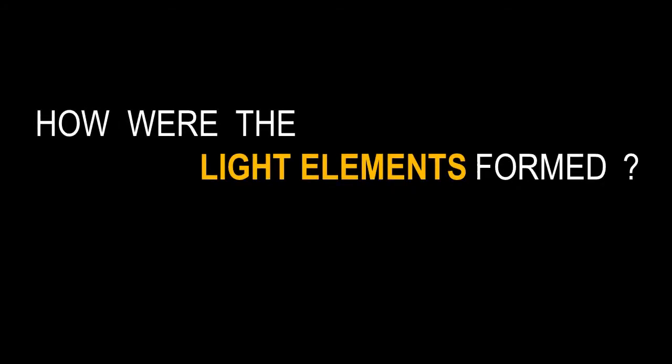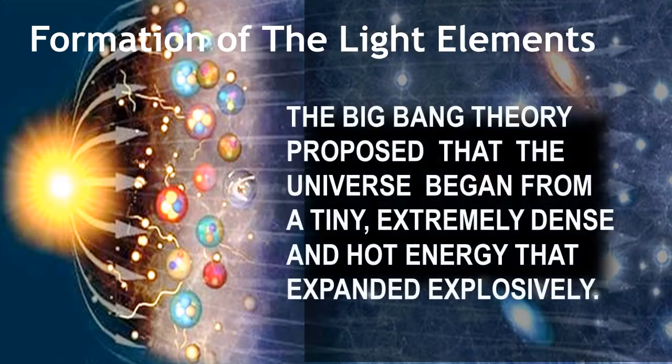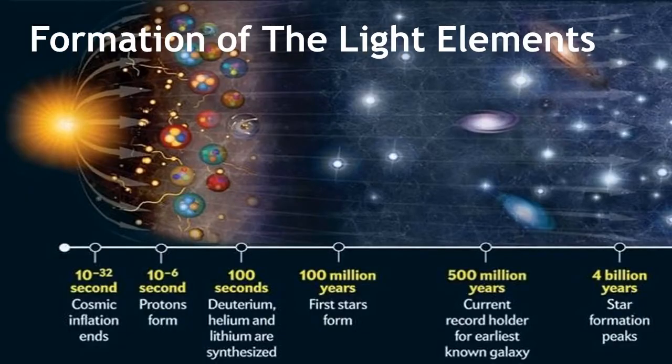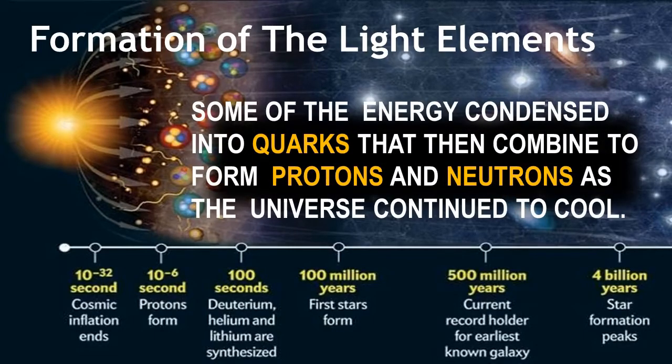How were the light elements formed? Formation of the light elements. The Big Bang theory proposed that the universe began from a tiny, extremely dense, and hot energy that expanded explosively. Some of the energy condensed into quarks that then combined to form protons and neutrons as the universe continued to cool.